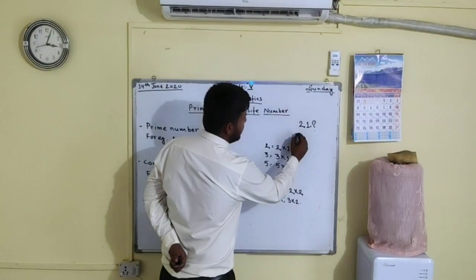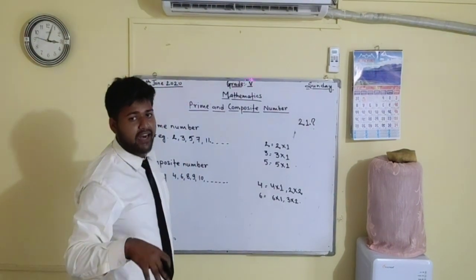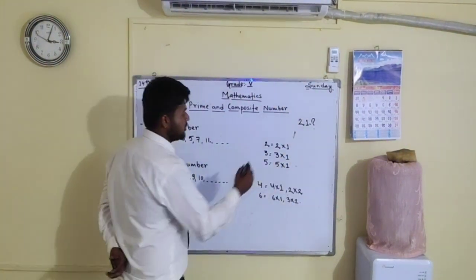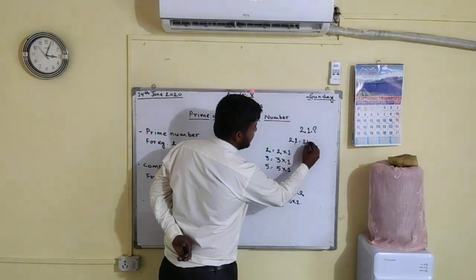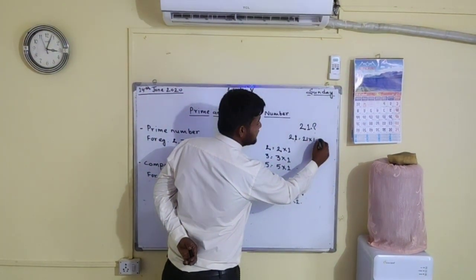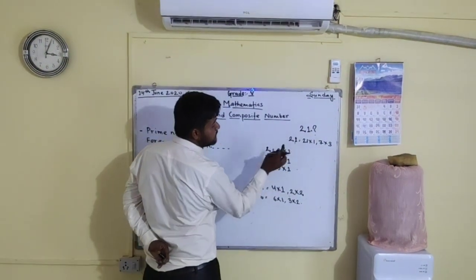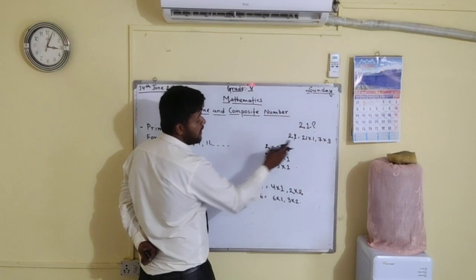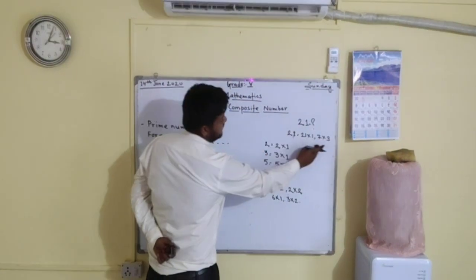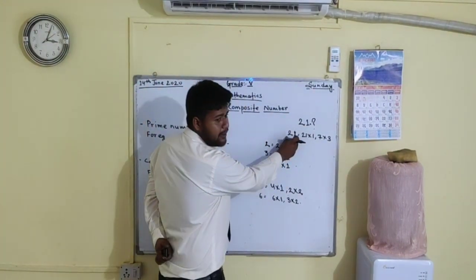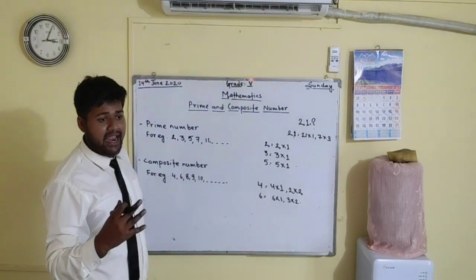This 21 is a composite number because it has got at least one other factor than one and itself. It is divided by 7 also and 3 also. So this 21 is a composite number because it has got at least one other factor than one and itself.